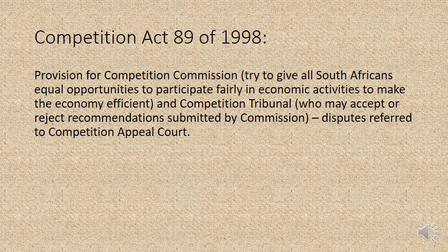If we look at the Competition Act 89 of 1998, this law made provision for the Competition Commission, which tries to give South Africans equal opportunities to participate fairly in economic activities, making our economy efficient. We also have a Competition Tribunal who either accepts or rejects recommendations submitted by the Commission, and any disputes are referred to the Competition Appeal Court. The three institutions that exist are the Competition Commission, the Competition Tribunal, and the Competition Appeal Court.